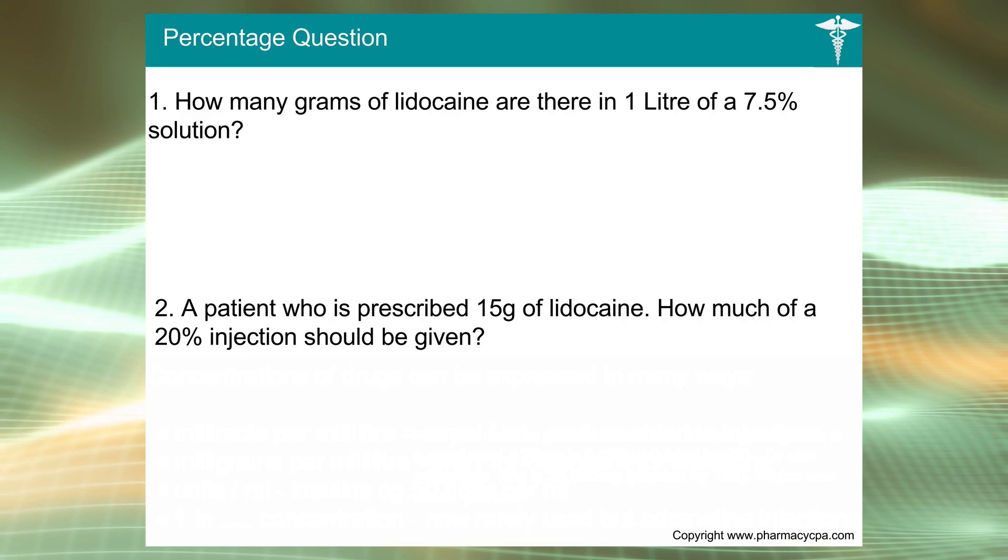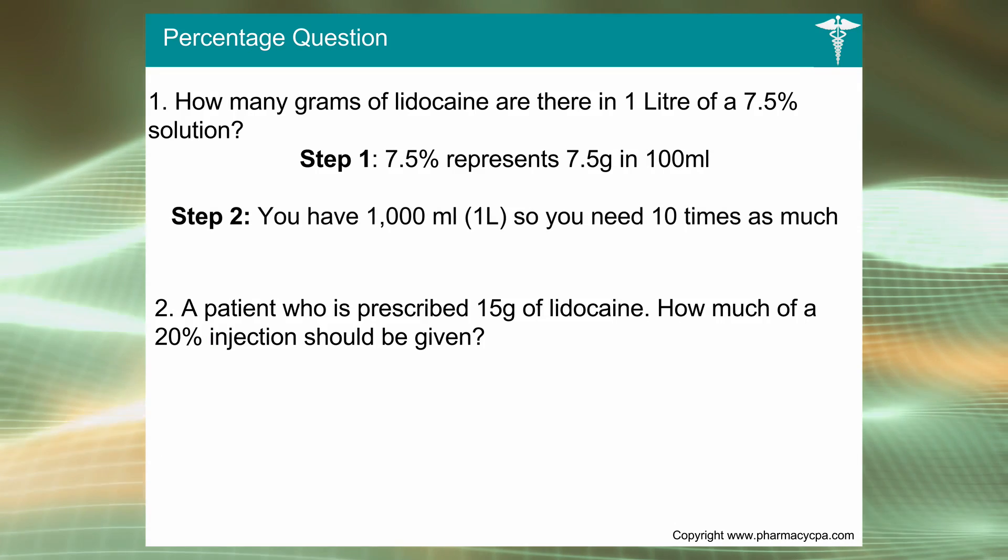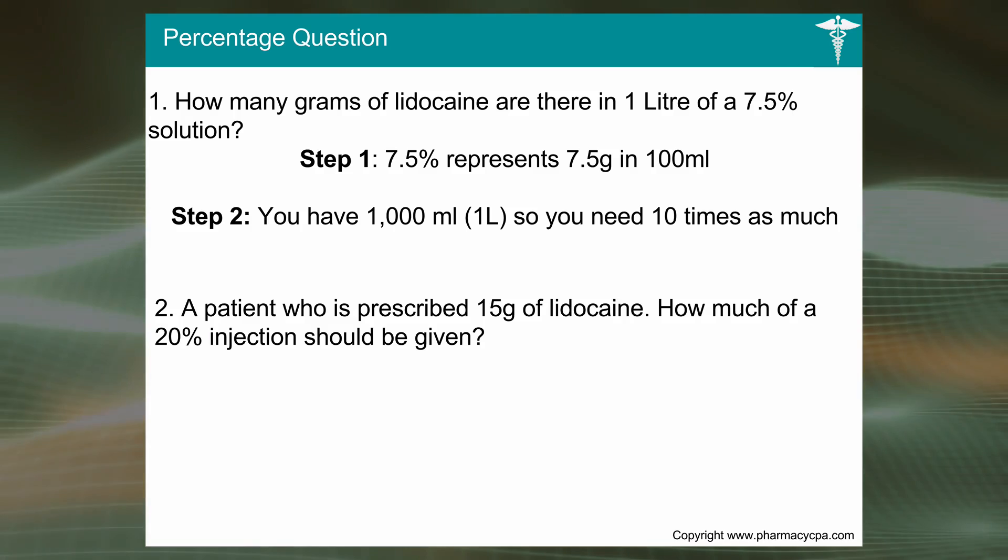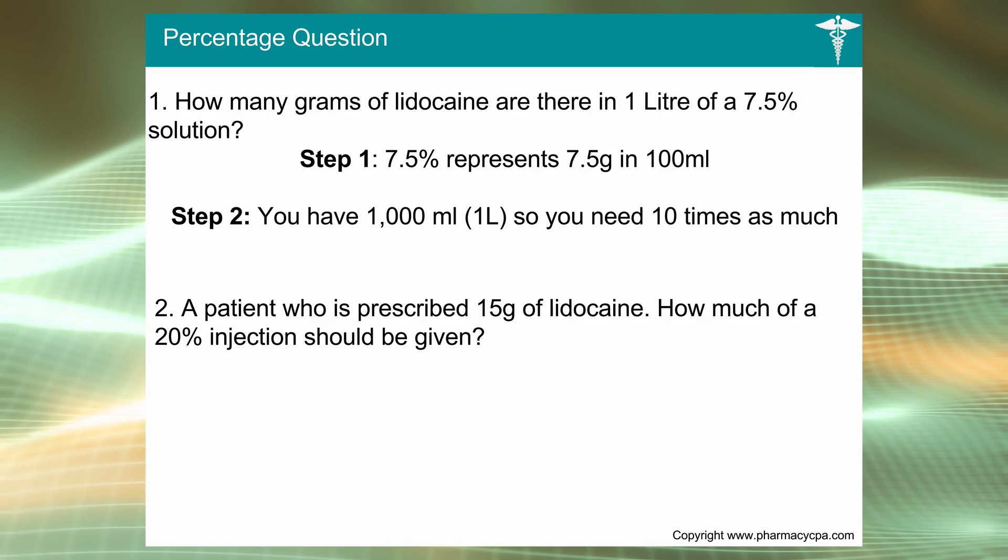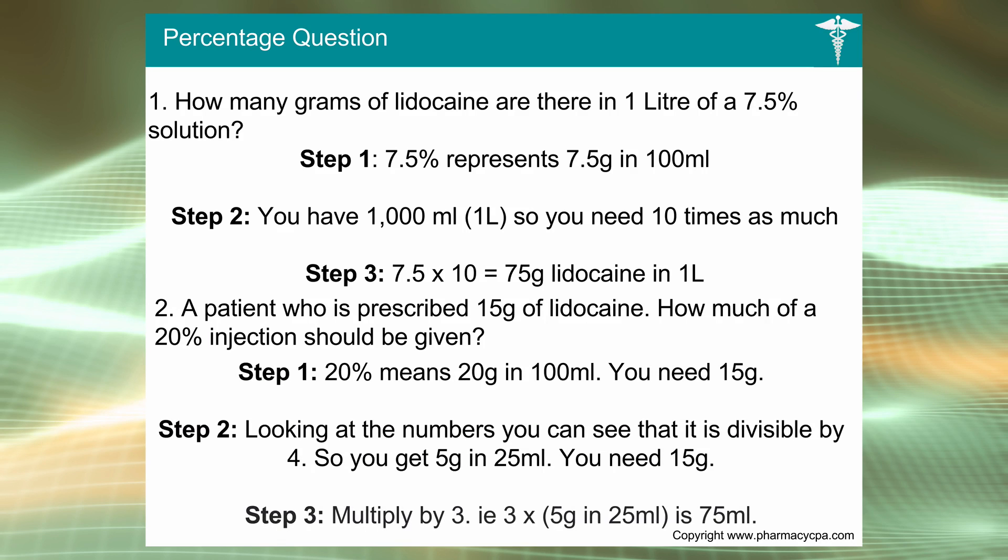How many grams of lidocaine are there in one liter of a 7.5% solution? A 7.5 percent solution contains 7.5 grams in 100 mils. If you've got a thousand mils, all you do is add a decimal place, so it would be 75 grams. A patient who is prescribed 15 grams of lidocaine: how much of a 20% injection should be given? A 20% injection contains 20 grams in 100 mils, so it would be approximately a quarter less, around about 75 mils.